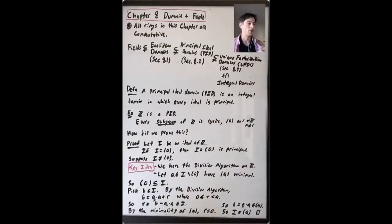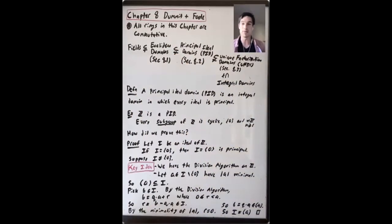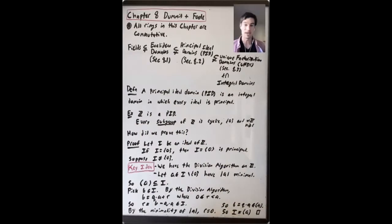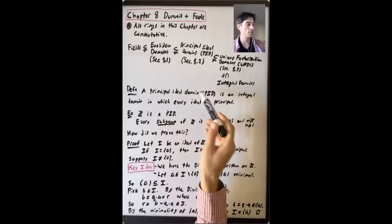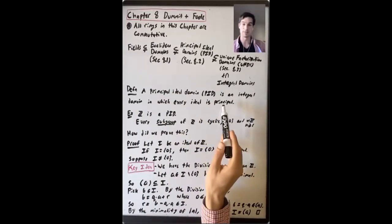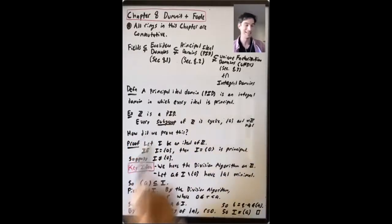This first lecture within Chapter 8 is going to focus on Euclidean domains. But in order to talk about them, I want to take a step back and talk about some examples that we really know and understand. To do that, I first want to give a careful definition of a PID. A principal ideal domain, or PID, is an integral domain in which every ideal is principal. So what's an example that we know? Well, Z is a PID.